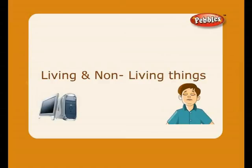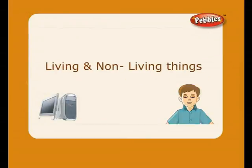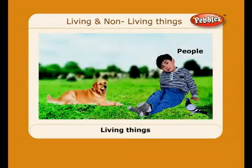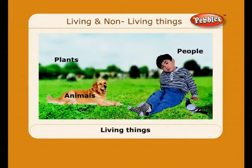Living and non-living things. People, animals, and plants are living things. They are all natural things.